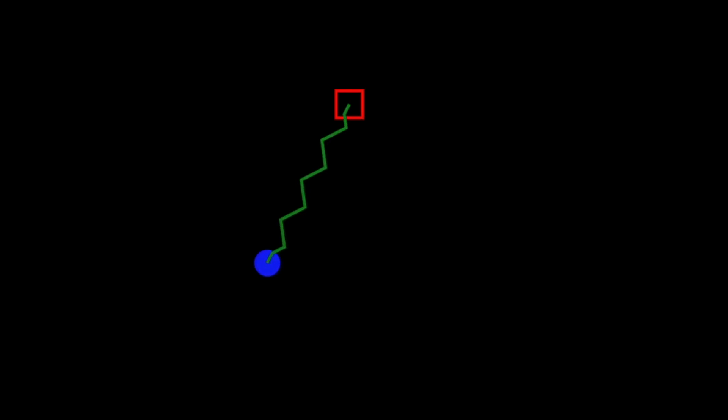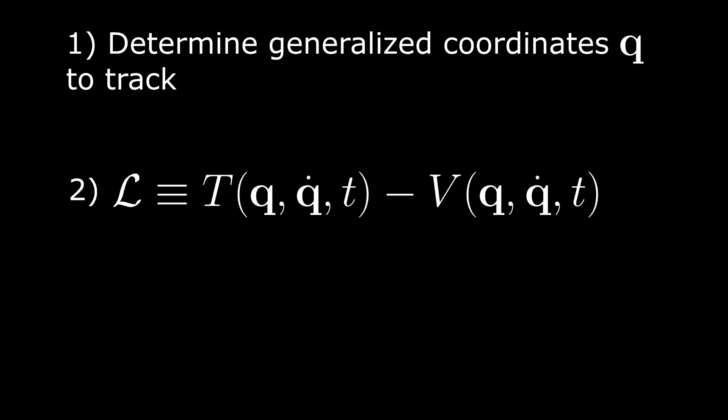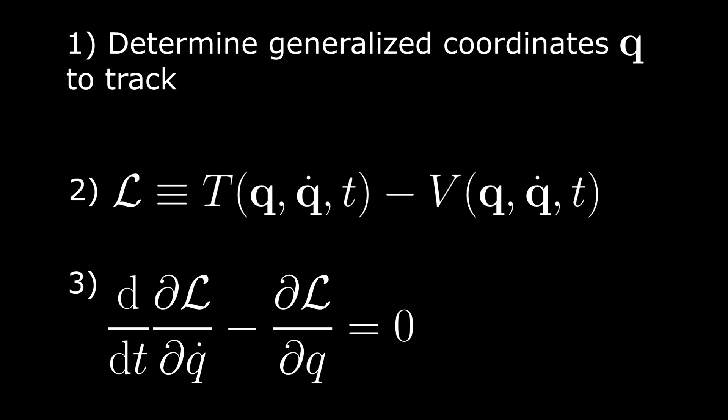In this derivation, I'm going to emphasize the following three key steps. One, we determine the set of generalized coordinates to fully describe our elastic pendulum. Two, we determine our Lagrangian function in terms of these coordinates. And three, once we have defined our Lagrangian, we plug it into the Euler-Lagrange equations for each of our coordinates and extract out the equations of motion.